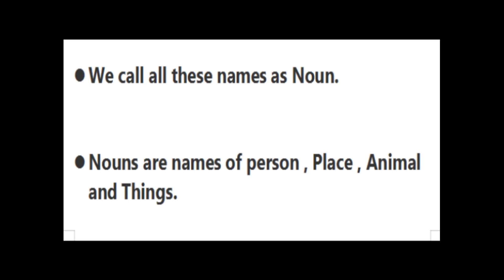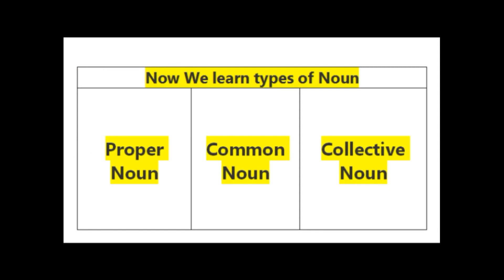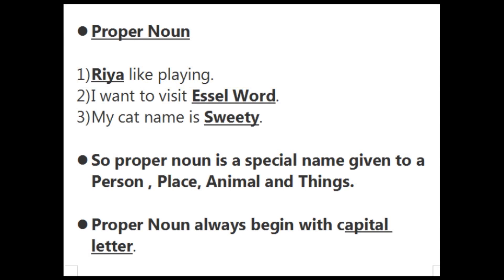There are three types of noun. Now we'll learn about types of noun: proper noun, common noun and collective noun. Here we'll learn only these three types of noun. Aur bhi nouns ke types hain, but yahan par hum log ye teeno type read karenge.